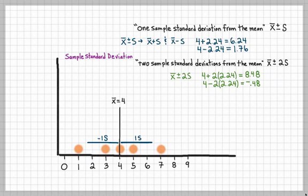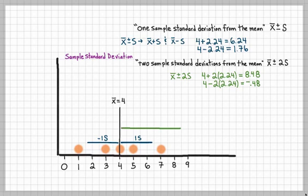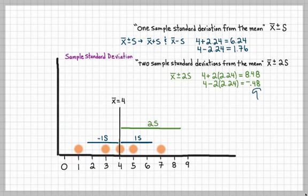We draw the distances: from 8.48 to the mean, that's positive two standard deviations. And from negative 0.48 all the way to the mean, that's negative two standard deviations.